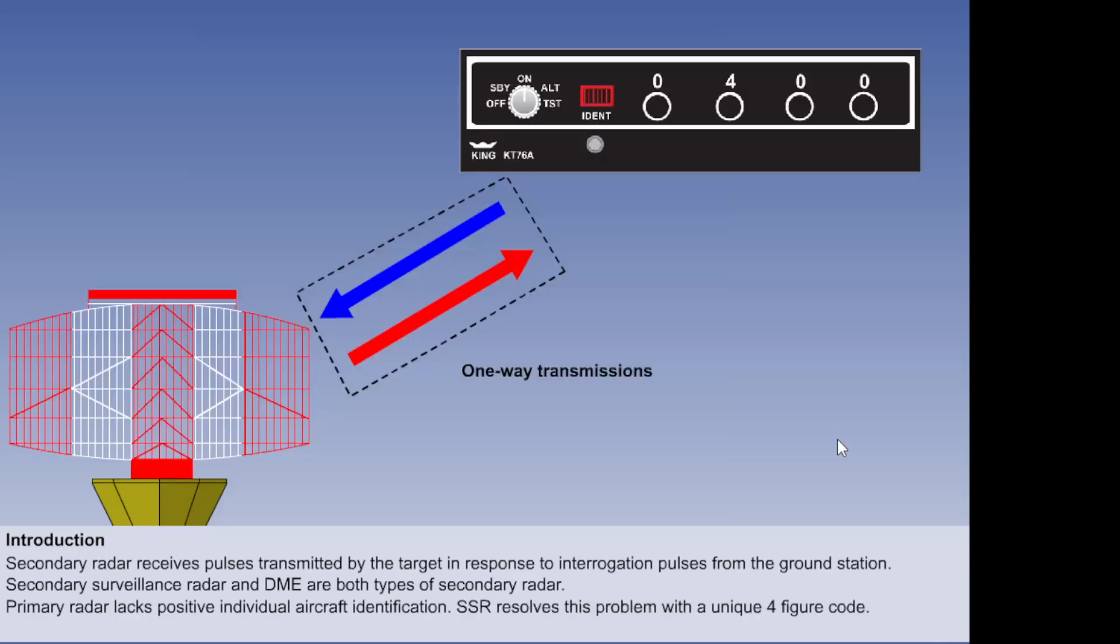The SSR ground equipment is referred to as the interrogator. The airborne equipment is known as the transponder. To resolve the identification problem, air traffic control allocates a four-digit code, which the pilot sets on the transponder. When interrogated, the transponder automatically replies with the four-digit code in the form of pulses. Hence, both transmissions are one-way only, from transmitter to receiver.